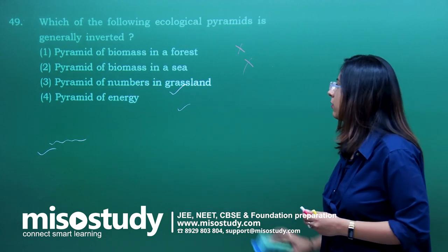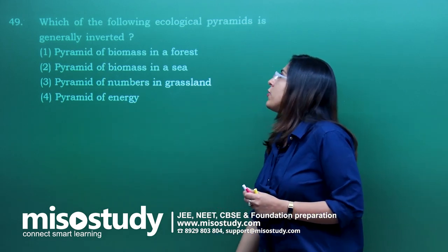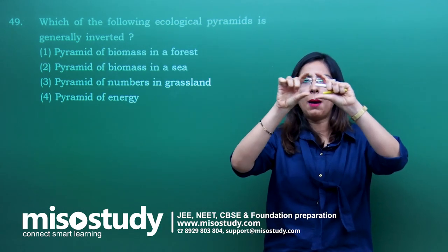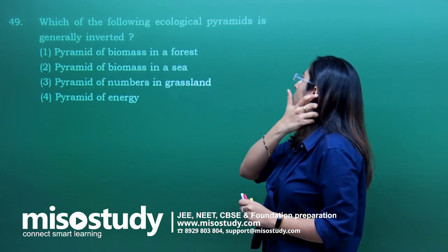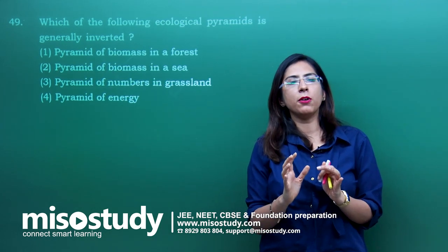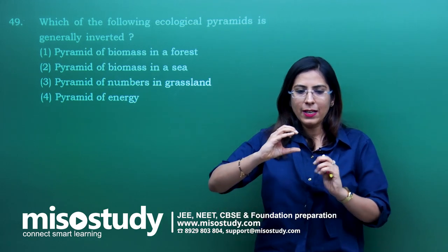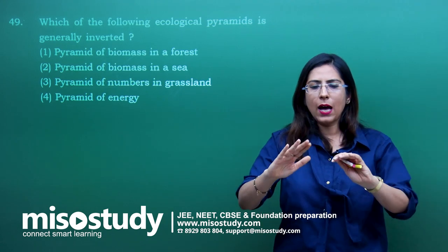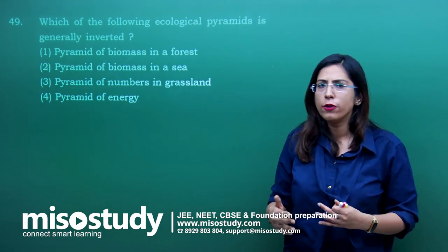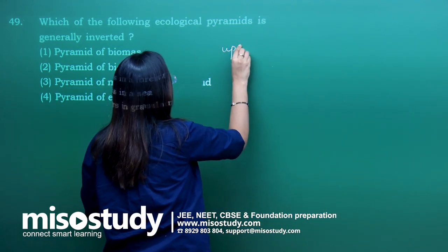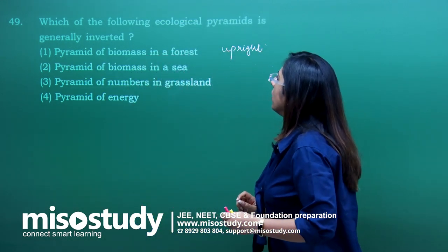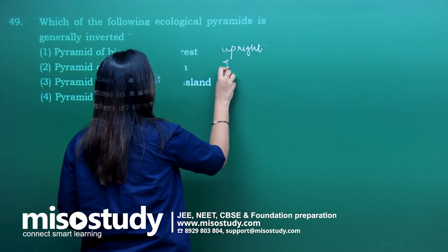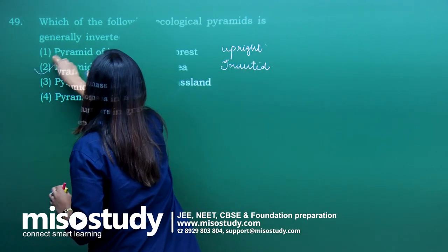Question number 49 — which of the following ecological pyramids is generally inverted? In inverted pyramids, the upper part is broader than the lower part. The pyramid of biomass in a forest is always upright because green plants have higher biomass than organisms at the herbivore or carnivore level. The pyramid of biomass in a sea is always inverted — and they are asking for an inverted type, so I will go for option 2.